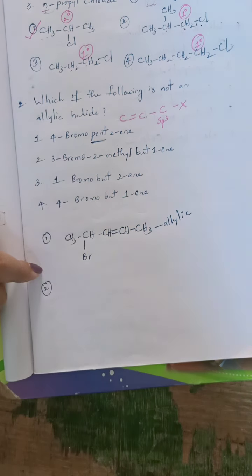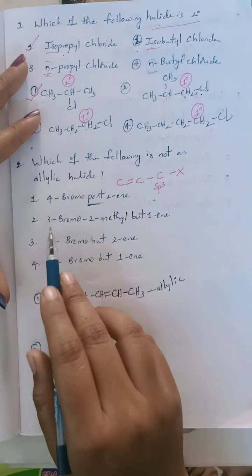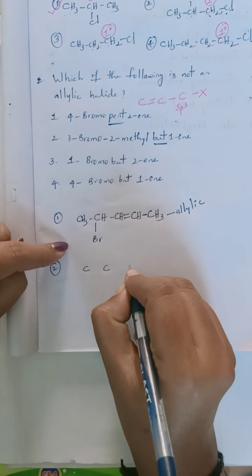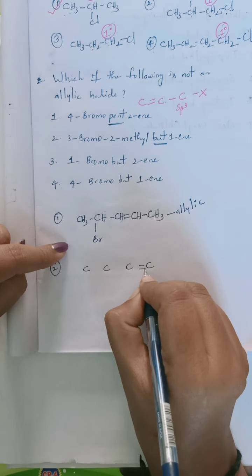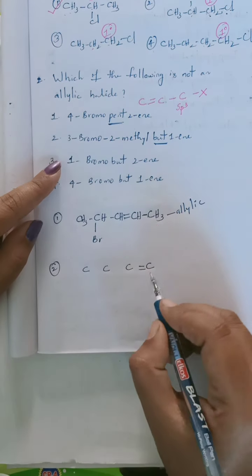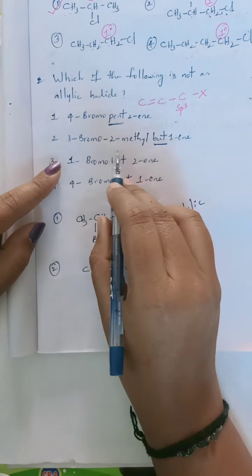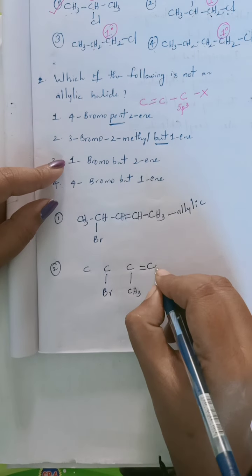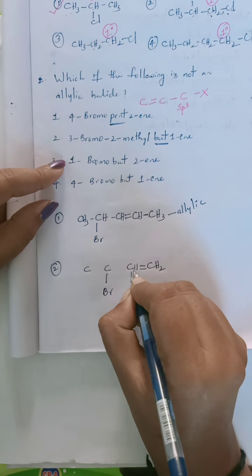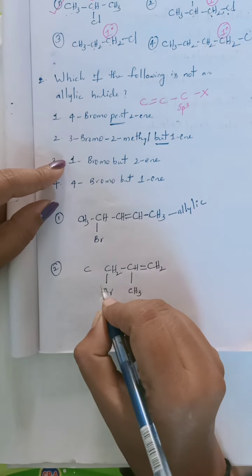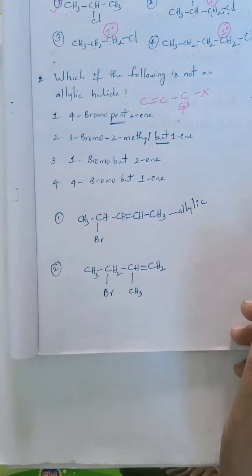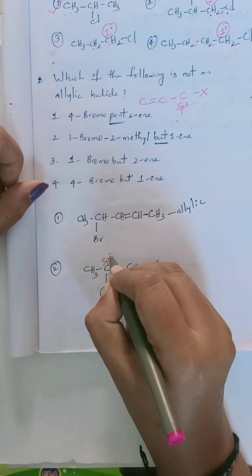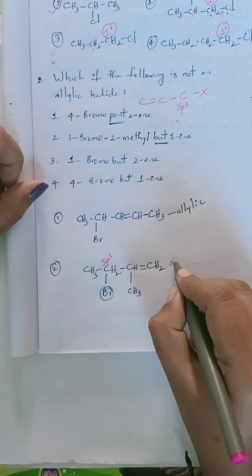Second structure: 2-bromo-2-methylbut-1-ene — four carbons with a double bond at position 1, bromine at position 2, and a methyl group at position 2. The halogen is attached to an Sp3 carbon which is adjacent to an Sp2 carbon — so it is allylic. Third structure: 1-bromobut-2-ene — four carbons, double bond at position 2, bromine at position 1. Halogen is attached to an Sp3 carbon adjacent to the double-bonded carbon — again allylic.